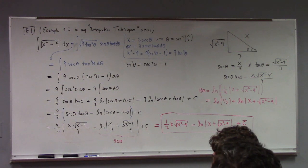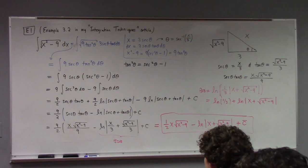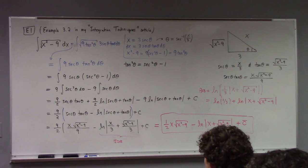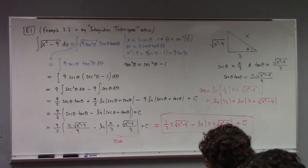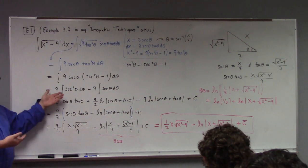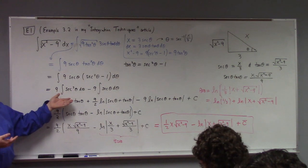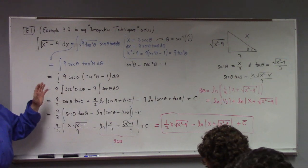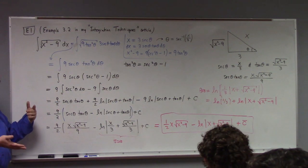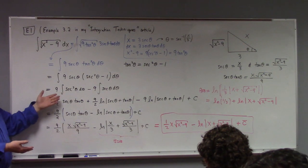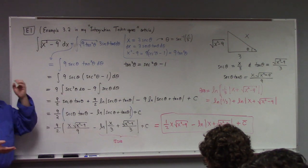So when faced with the problem of the square root of a variable squared minus a number, trigonometric substitution is kind of beastly, because it requires us to do the integral of secant cubed — which if it's open notes is not so bad, but if it's closed notes, that hurts. The integral of secant cubed is pain. Let me show you what this problem looks like with a hyperbolic substitution.